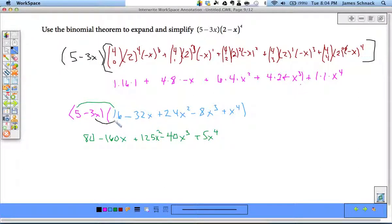Now I switch to the other term. Negative 3x times 16. It's going to be negative 48x. Negative 3x times negative 32 is positive 96x squared.